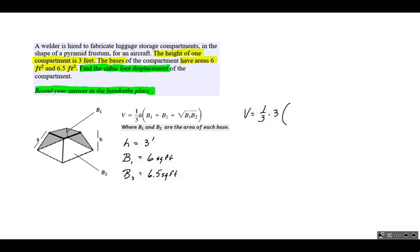We're going to plug in for B1, 6. For B2, 6.5. And then we add the square root of 6 times 6.5.